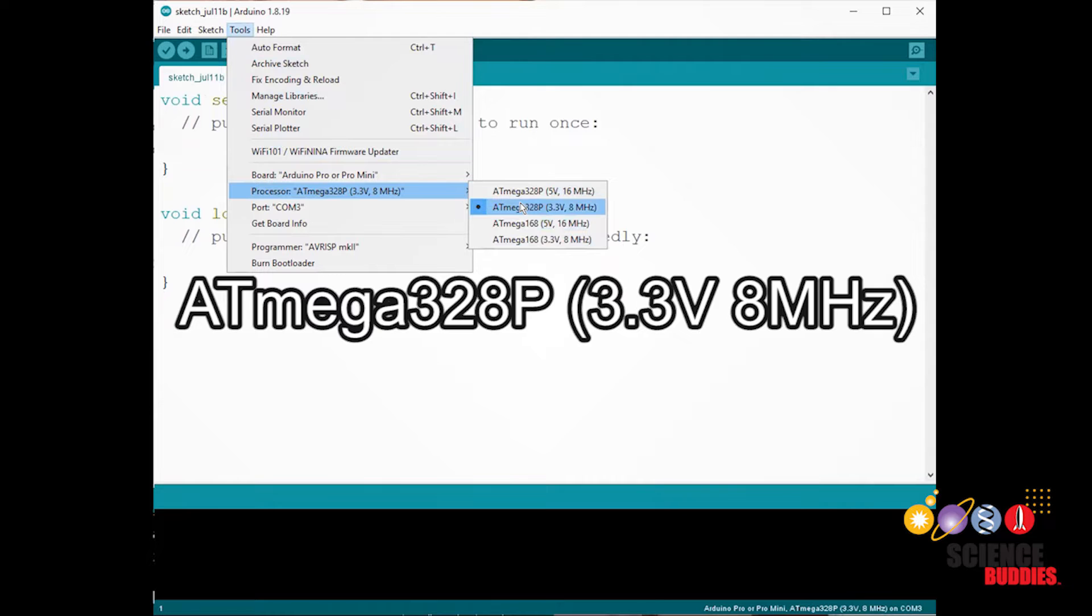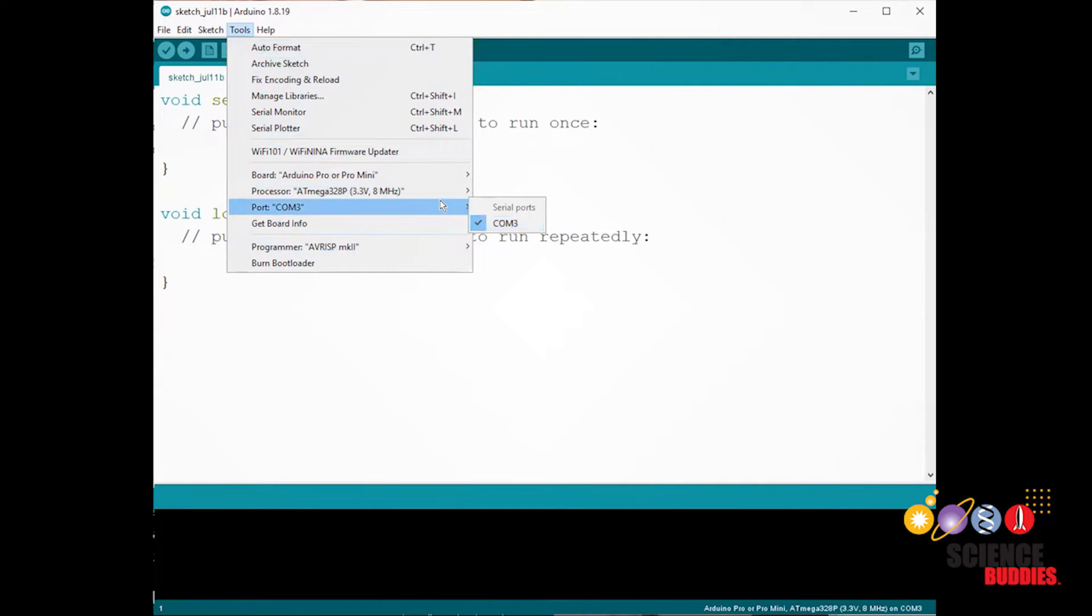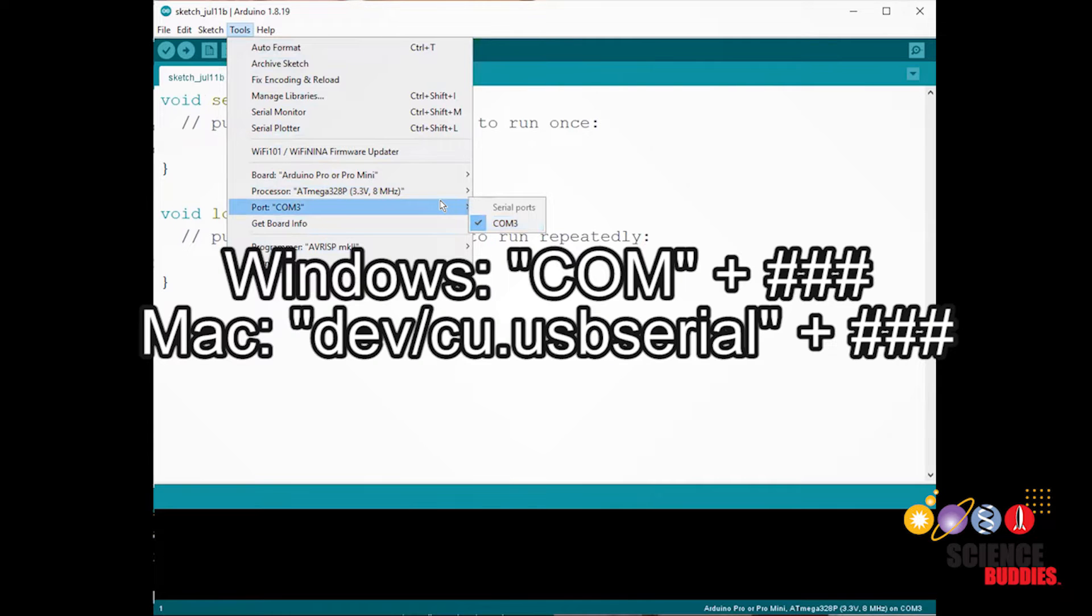Finally, it's time to select your port. This should be COM, followed by a series of numbers, and it will be different for you if you have a Mac. If you have a Mac, it would be this, followed by a series of numbers.